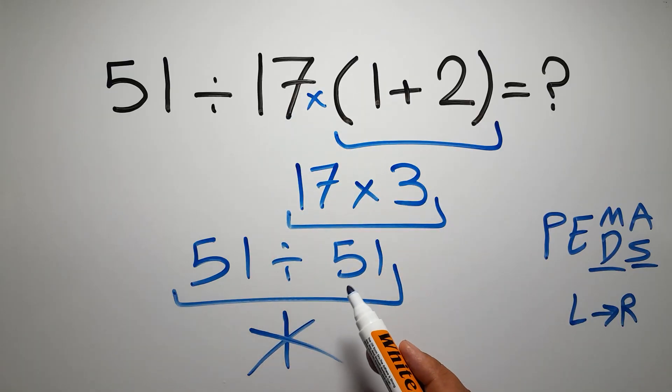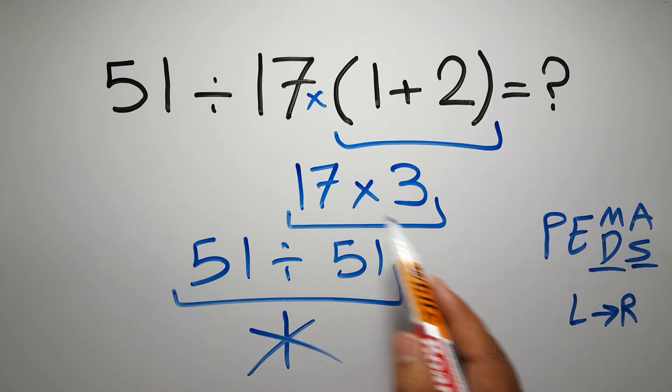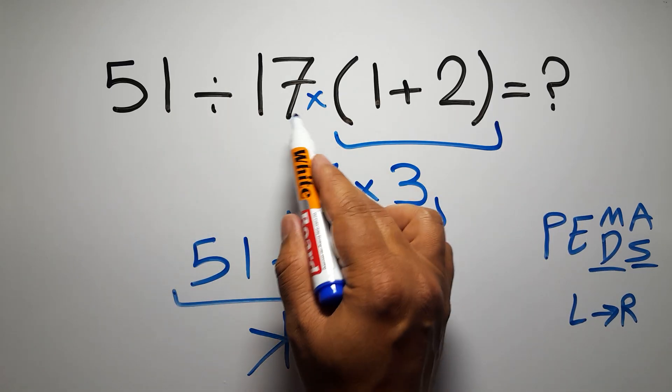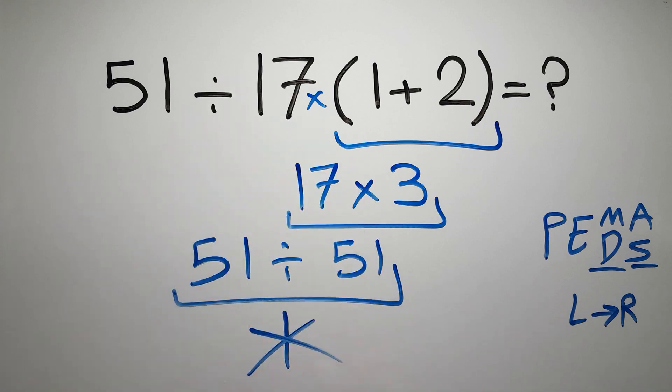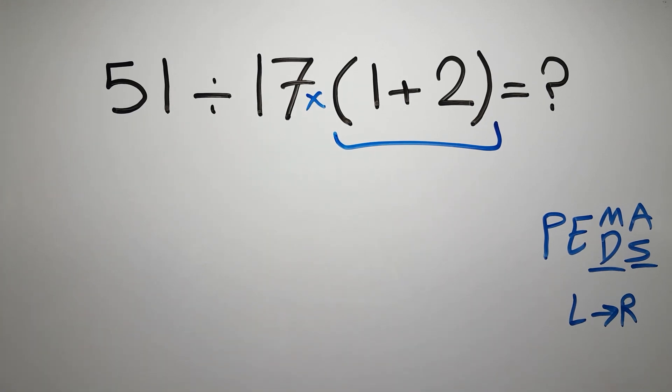Okay, so according to PEMDAS, first we have to do this parentheses, then this division, and finally this multiplication. If we do this multiplication before this division, it is wrong.